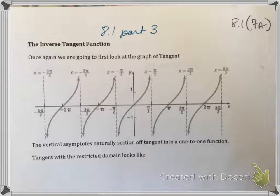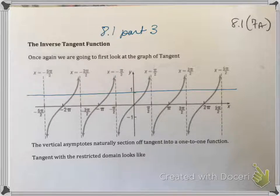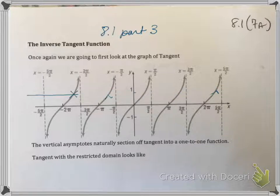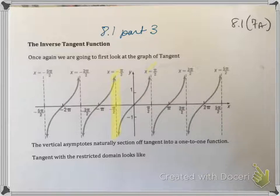Just like sine and cosine, we have to restrict this to make it one-to-one because it will fail a horizontal line test. For instance, if y equals 1, it hits more than once, so that's a problem. We have to restrict it. Because tangent has some nice vertical asymptotes there, it restricts itself pretty nicely.